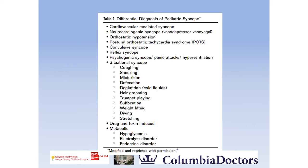Situational syncope refers to the circumstances under which syncope occurred. Examples include coughing or sneezing, which activates the vagus nerve slowing the heart; micturition or defecation with straining causing a vagal response; drinking cold liquids; hair grooming; trumpet playing, which increases intrathoracic pressure; suffocation; weight lifting; diving; and stretching. When you see a doctor with these symptoms, hopefully they will be asking about these circumstances.